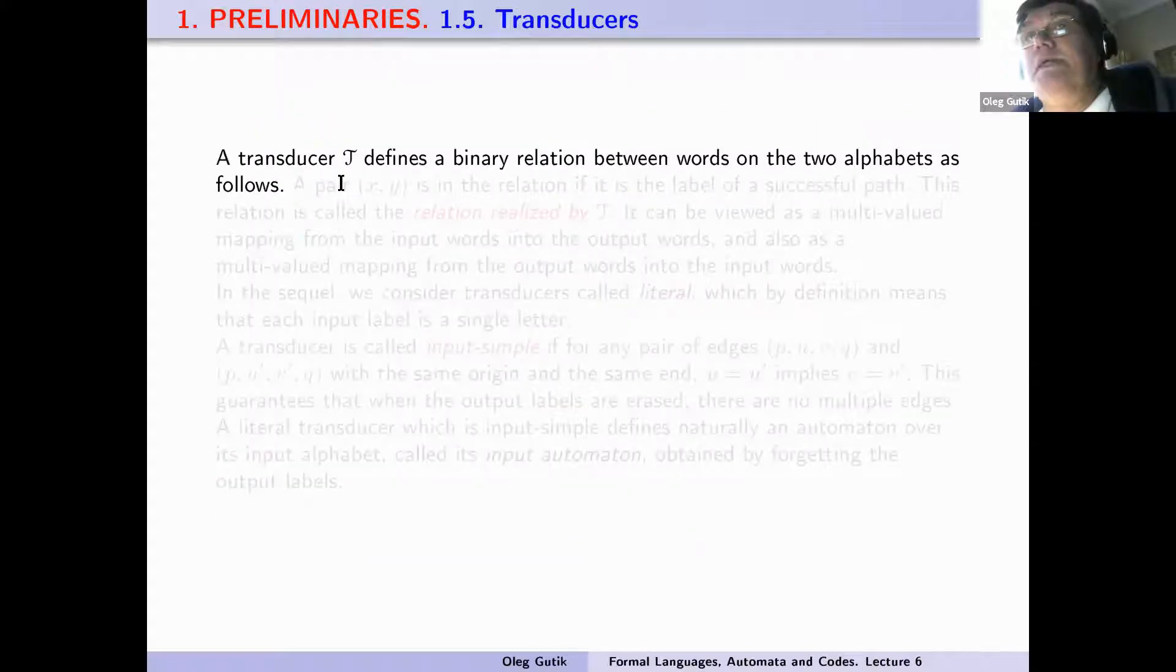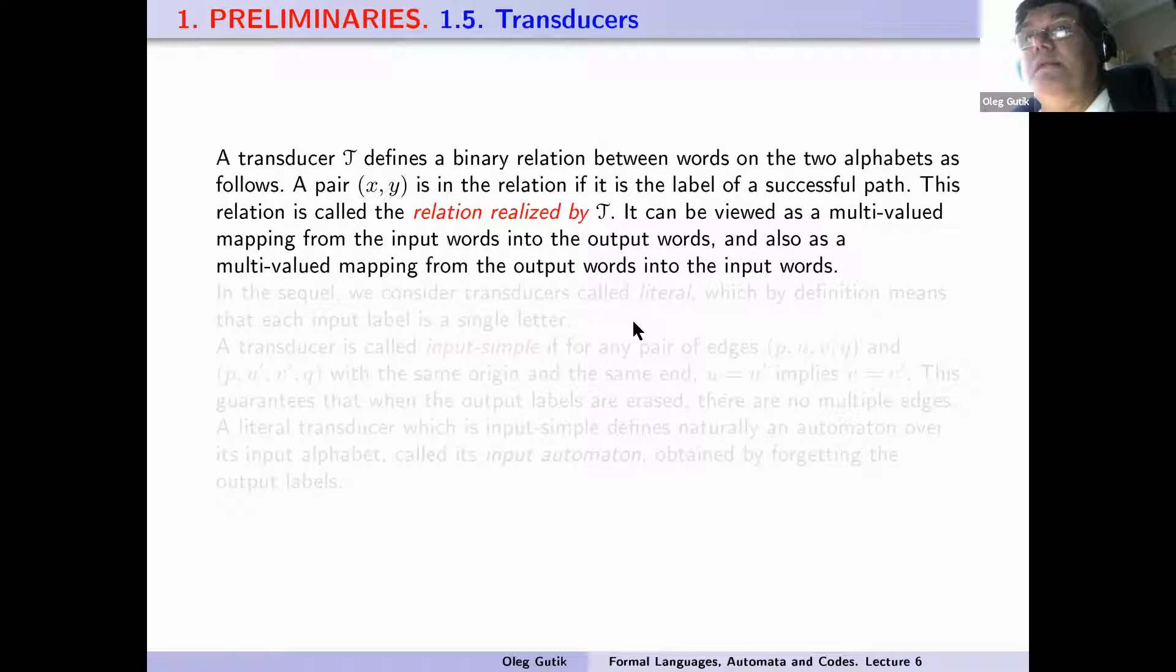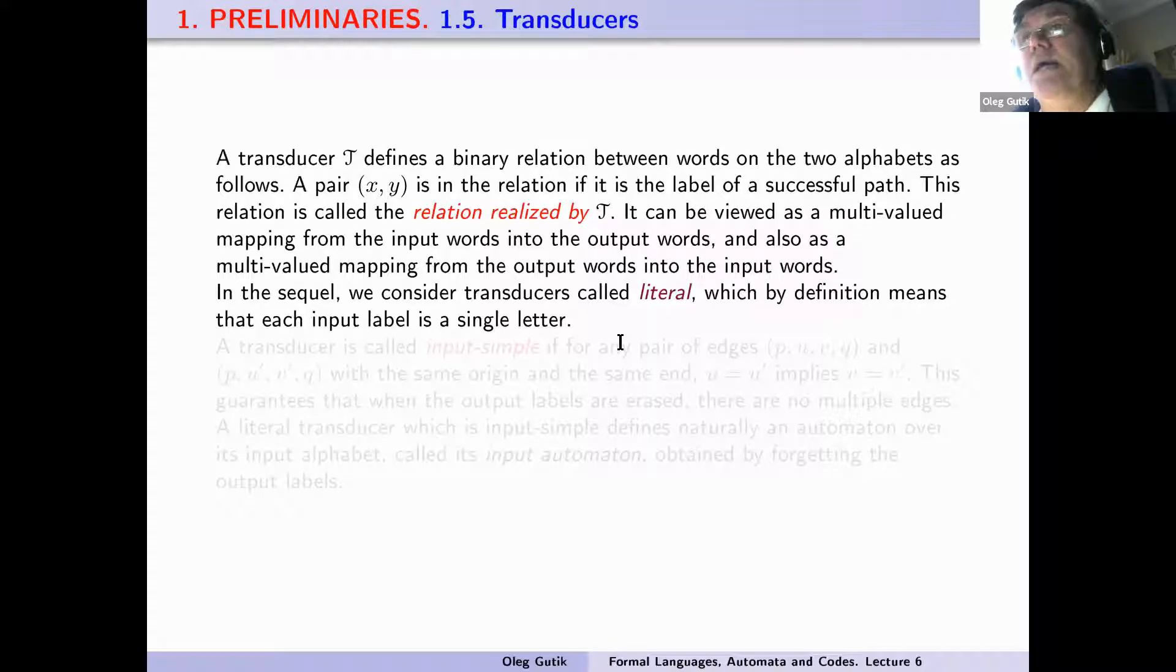A transducer T defines a binary relation between words on the two alphabets as follows. An ordered pair (x, y) is in the relation if it is the label of a successful path. This relation is called the relation realized by the transducer T. It can be viewed as a multi-valued mapping from the input words into the output words, and also as a multi-valued mapping in the reverse direction.